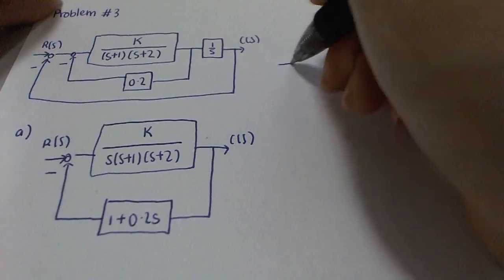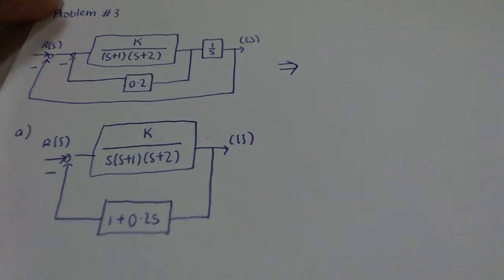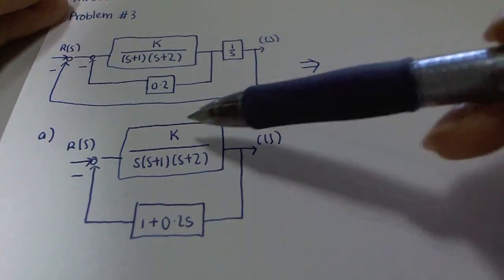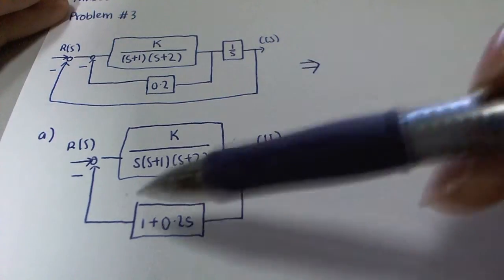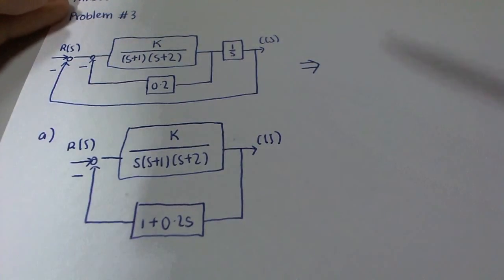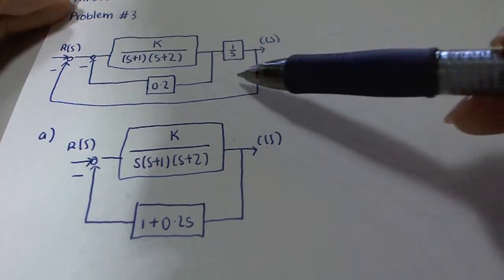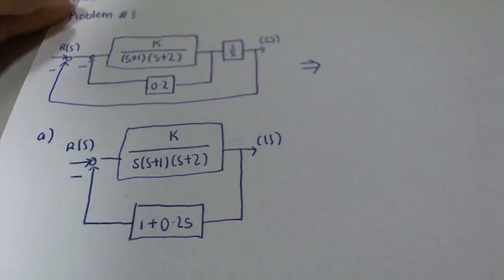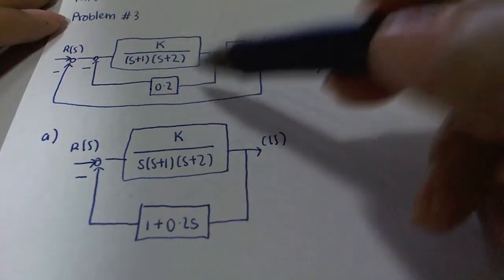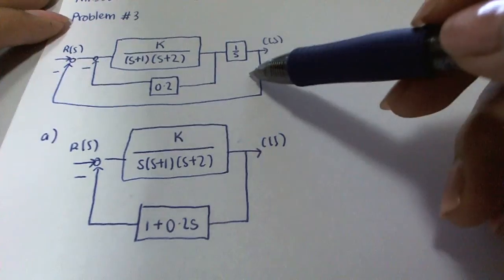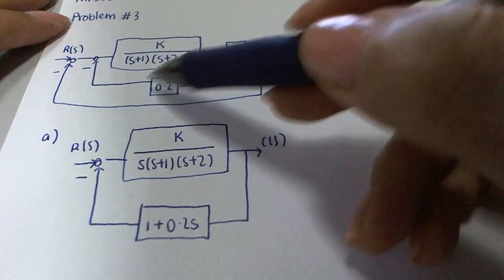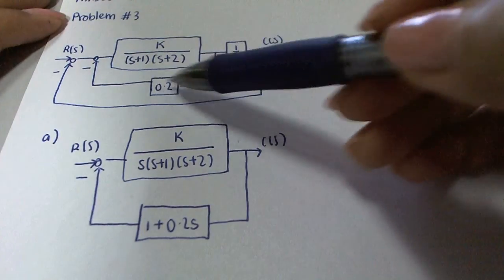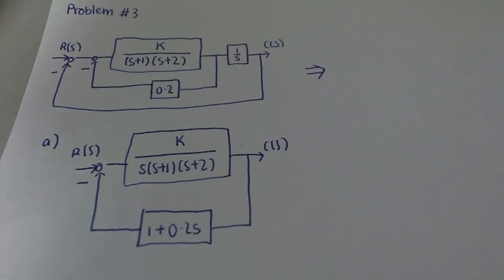It's actually not a very complicated problem. First of all, we have to identify that there is only one component in the forward loop and one component in the feedback loop. What we can do is bring this line outside of the integrator 1/s, simplifying the forward loop into just a single component. We have to add some term at the feedback loop so that once we multiply by the integrator, the effect will cancel out.